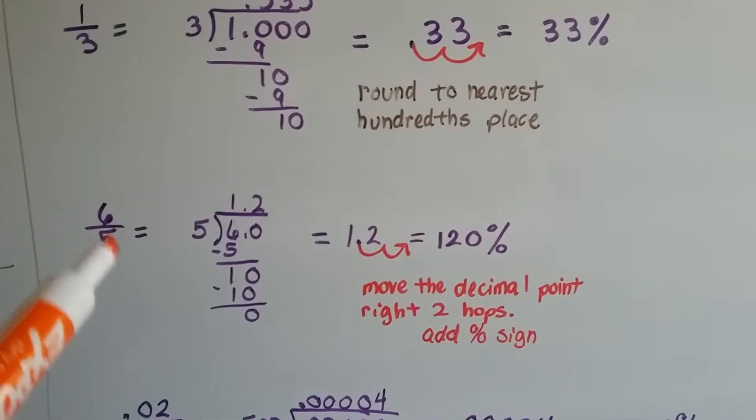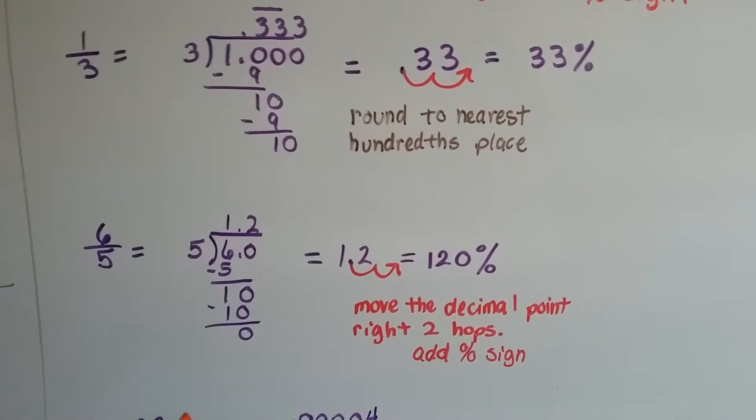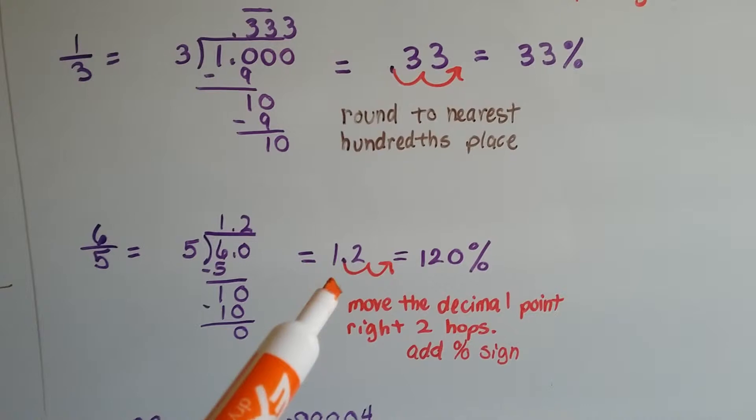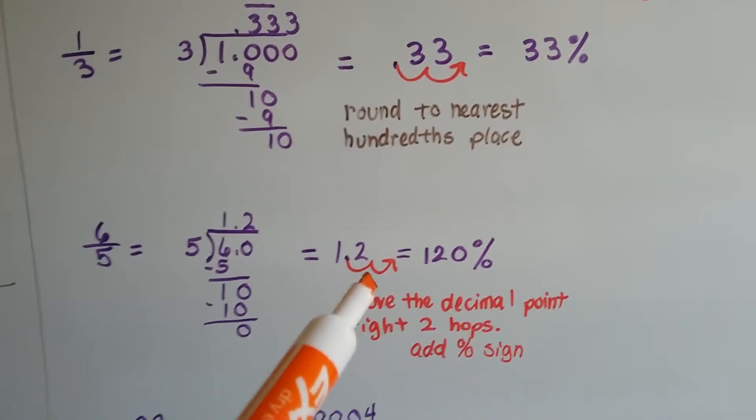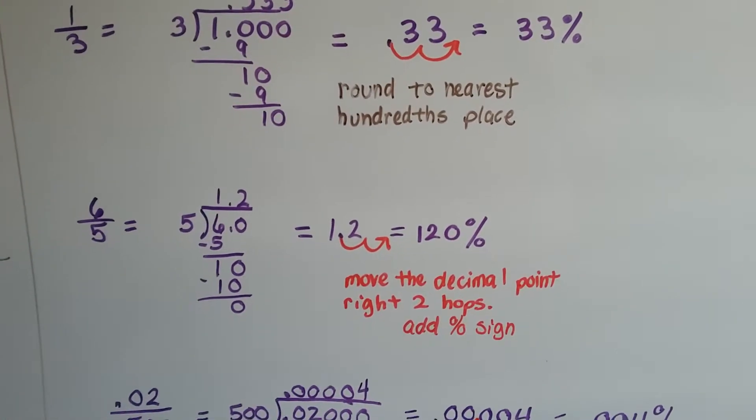If we see six-fifths, how many times can five fit into six? 1.2 times when we do the long division. And the 1.2, we move the decimal point back, two hops, one, two. We have to add a zero there, and it ends up becoming 120%.